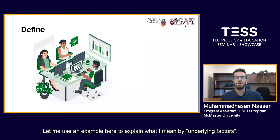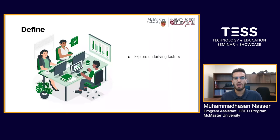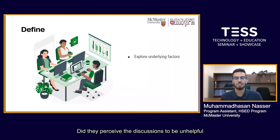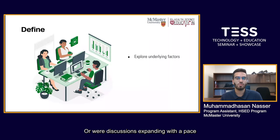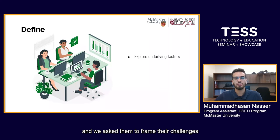Let me use an example to explain what I mean by underlying factors. We saw that learners mentioned struggling to keep up with asynchronous online discussion. But why was that actually occurring? Did they perceive the discussions to be unhelpful to their learning and therefore lose interest? Or were discussions expanding with a pace that was simply too hard to keep up with? To explore these underlying factors, we held focus groups with learners and asked them to frame their challenges and opportunities as 'how might we' statements.